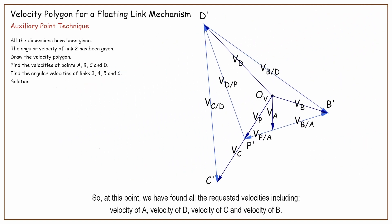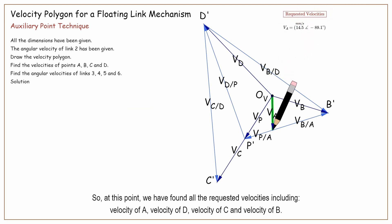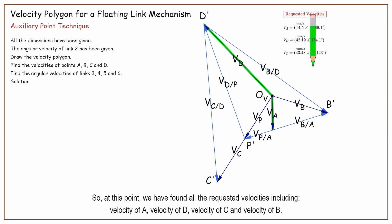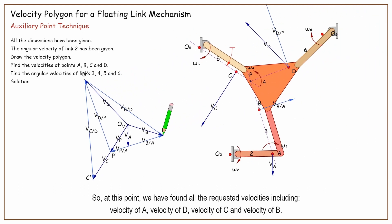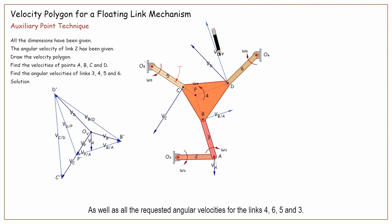So, at this point, we have found all the requested velocities, including velocity of A, velocity of D, velocity of C, and velocity of B. As well as all the requested angular velocities for links 4, 6, 5, and 3.